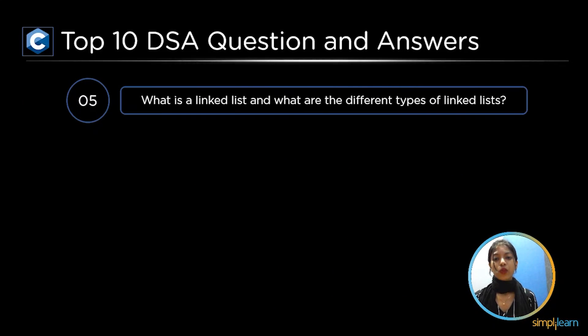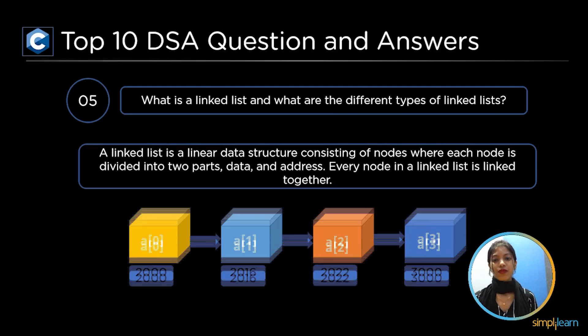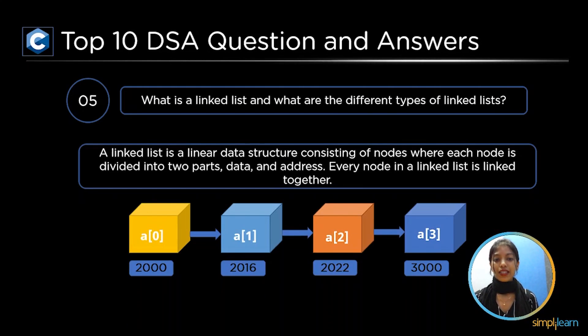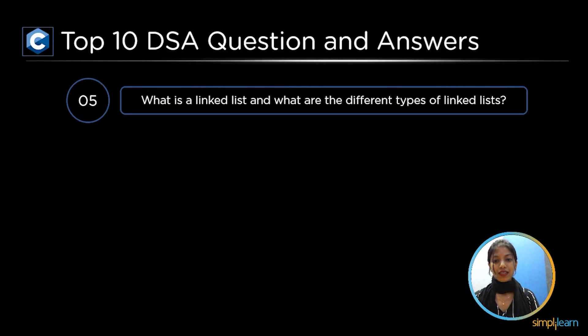The next top fifth question is what is a linked list and what are the different types of a linked list? A linked list is a linear data structure consisting of nodes where each node is divided into two parts, data and address. Every node in a linked list is linked together. The different types of linked list are singly linked list, doubly linked list, and circular linked list.